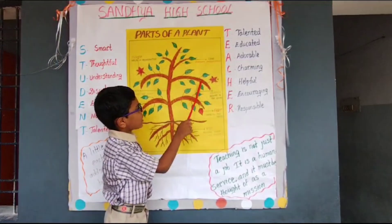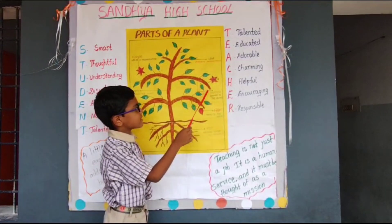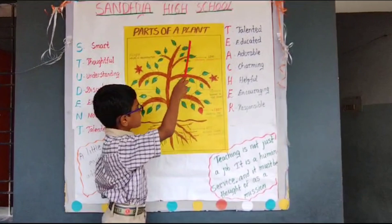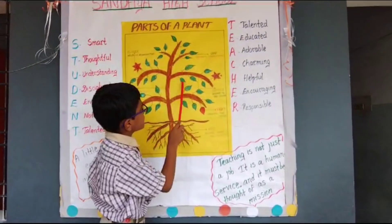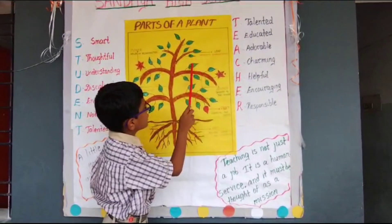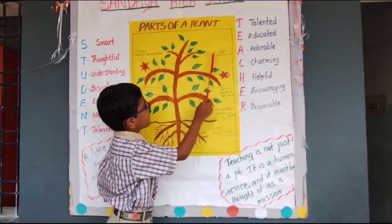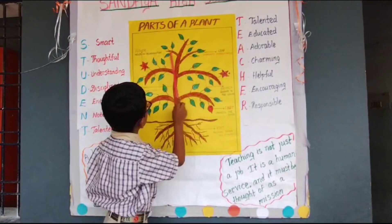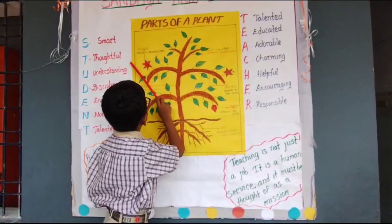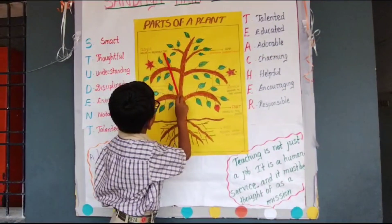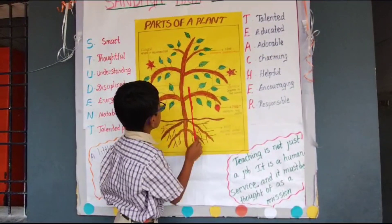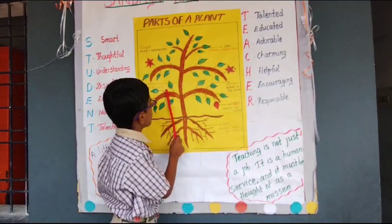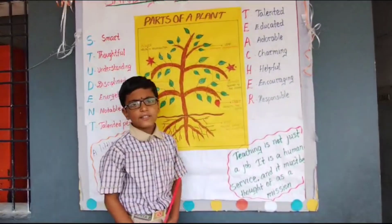These are branches — they support the leaves. These are leaves — they perform photosynthesis. These are flowers — they help in reproduction. This is the stem — it supports the plant. Thank you.